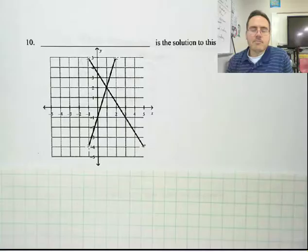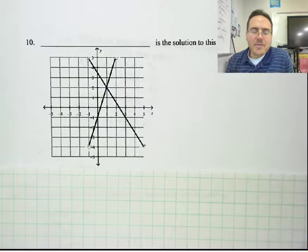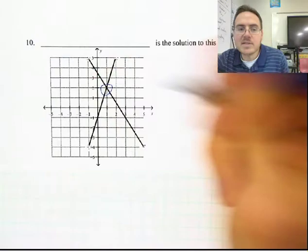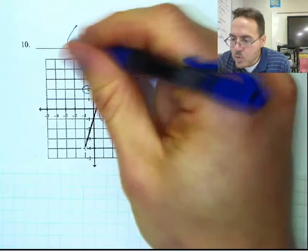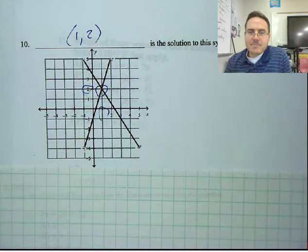Number 10 is the last of our graphing section. It has one solution, and it is right here where the two lines cross one time. The X value is 1, the Y value is 2, so this coordinate is 1, 2.